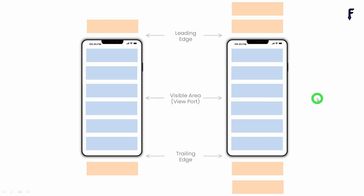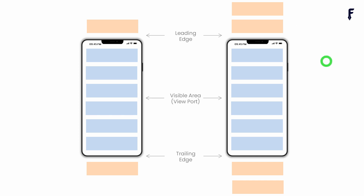On the other hand, if you change the cache extent to 400, since each element has a height of 200, ListView.Builder is now capable of holding two elements at the bottom — at the end of the visible area — and two elements at the leading edge before the visible area. So increasing the value of cache extent increases the capacity of ListView.Builder to hold elements about to get rendered on screen before and after the visible area.